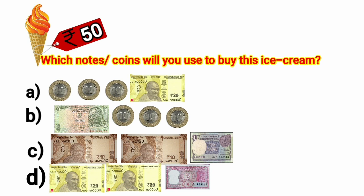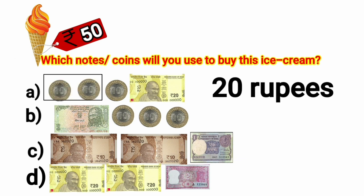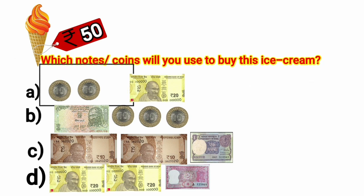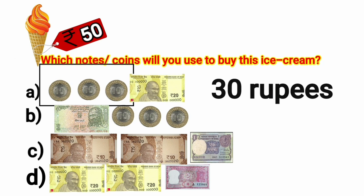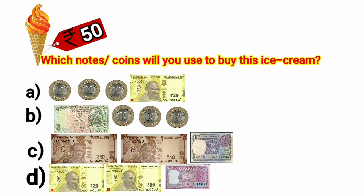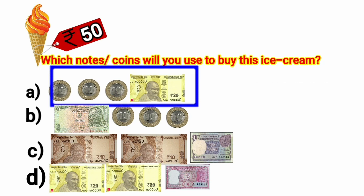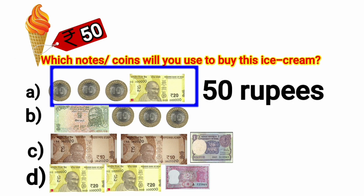A coin of 10 and one more coin of 10 make 20 rupees. Now, 20 and another coin of 10 make 30 rupees. 30 and a note of 20 rupees make 50 rupees. We have 50 rupees at option A and the cost of ice cream is also 50 rupees. So option A is the correct option and we will put a tick mark here.